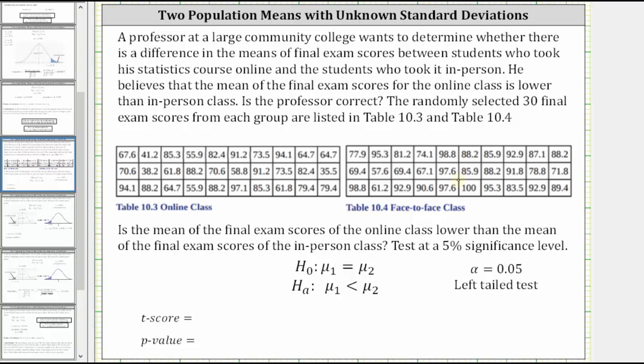So again, is the mean of the final exam scores of the online class lower than the mean of the final exam scores of the in-person class? Test at a 5% significance level.